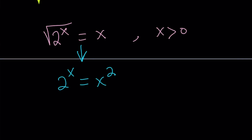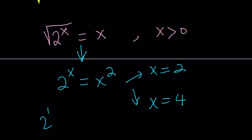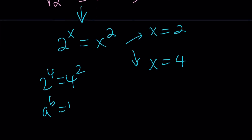2 to the power x equals x squared has two solutions. The first is the obvious one: if x is 2, then 2 to the second power equals 2 squared. But there's another one which is not obvious: x equals 4. Because 2 to the fourth power equals 4 squared, and 2 and 4 are the only integers that satisfy this type of relationship where a to the b equals b to the a, where a and b are different. Isn't that amazing?